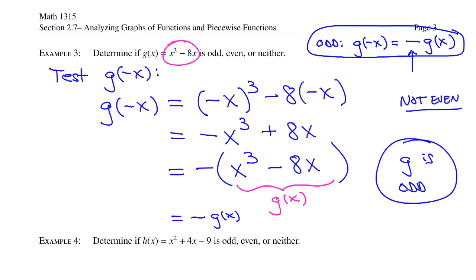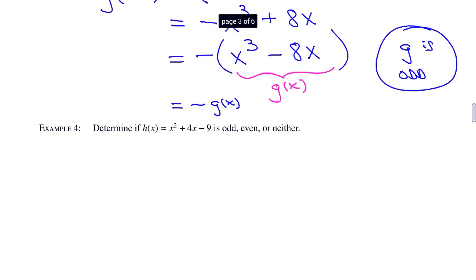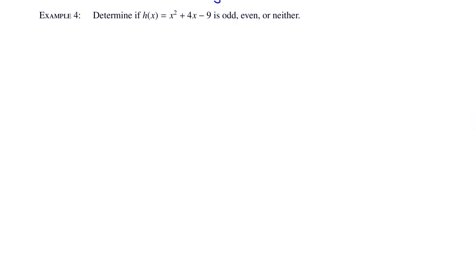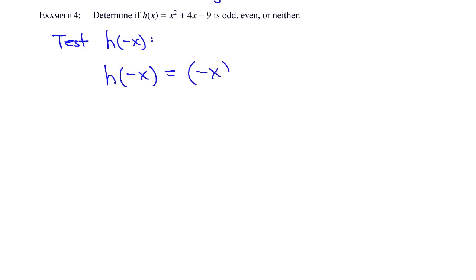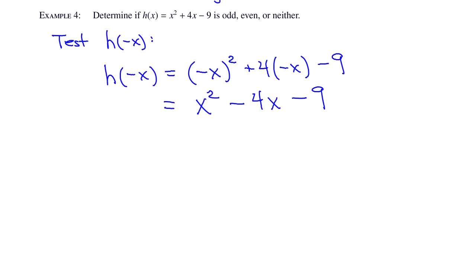Let's look at example 4. Determine if h of x equals x squared plus 4x minus 9 is odd, even, or neither. Test h of negative x: negative x squared plus 4 times negative x minus 9. Negative x squared equals x squared; 4 times negative x is negative 4x; then minus 9. This is not equal to the original h of x, so h is not even.